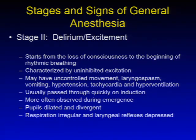Stage two is delirium or excitement. This stage starts from the loss of consciousness to the beginning of rhythmic breathing. It's characterized by uninhibited excitation. You may have uncontrolled movement, laryngospasm, vomiting, hypertension, tachycardia, and hyperventilation during this stage. It's usually passed through quickly on induction and more often observed during emergence. The pupils are dilated and divergent, respirations are irregular, and laryngeal reflexes are depressed.